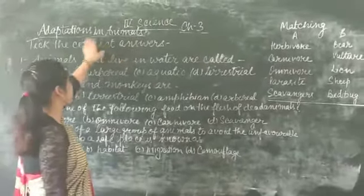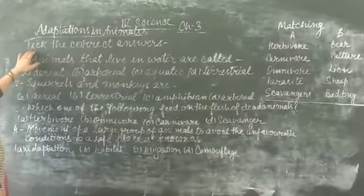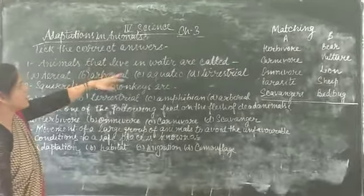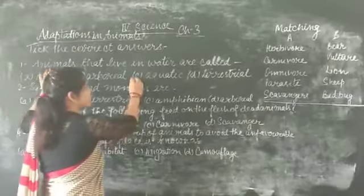This is the exercise for Chapter 3, adaptations in animals. Take the correct answers. Animals that live in water are called aquatic animals.